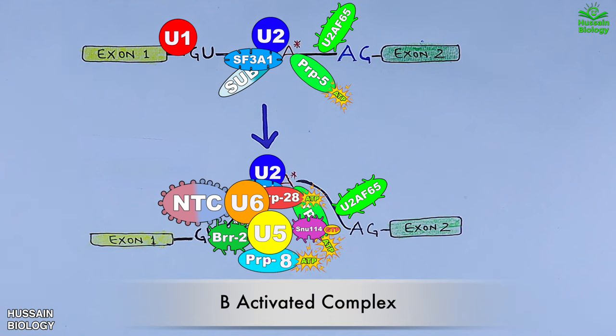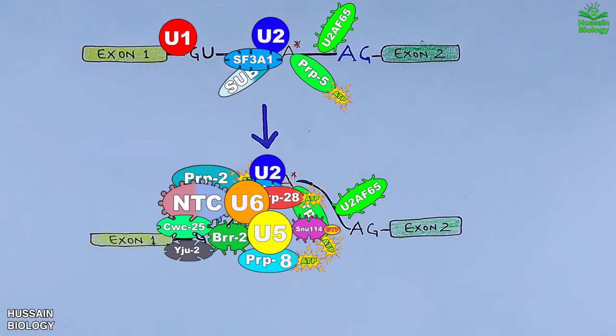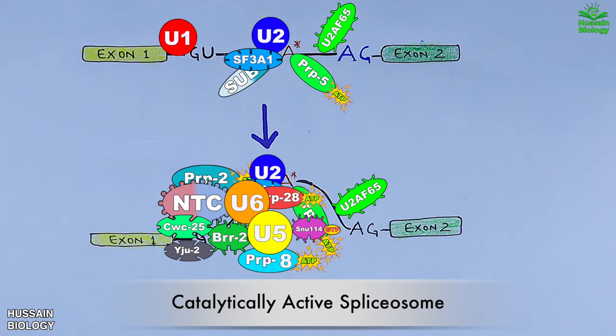In the next step, PRP2 comes in and binds, which makes SF3A release and aids in recruiting CWC25 and YJU2 proteins to the spliceosome complex as shown in the animation. Now this makes the catalytically active spliceosome. From here the catalysis occurs.